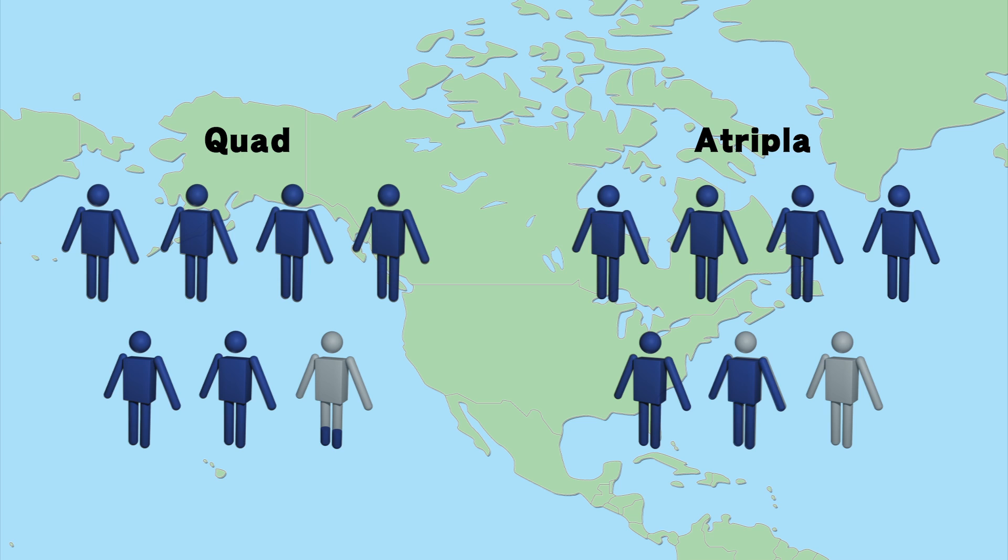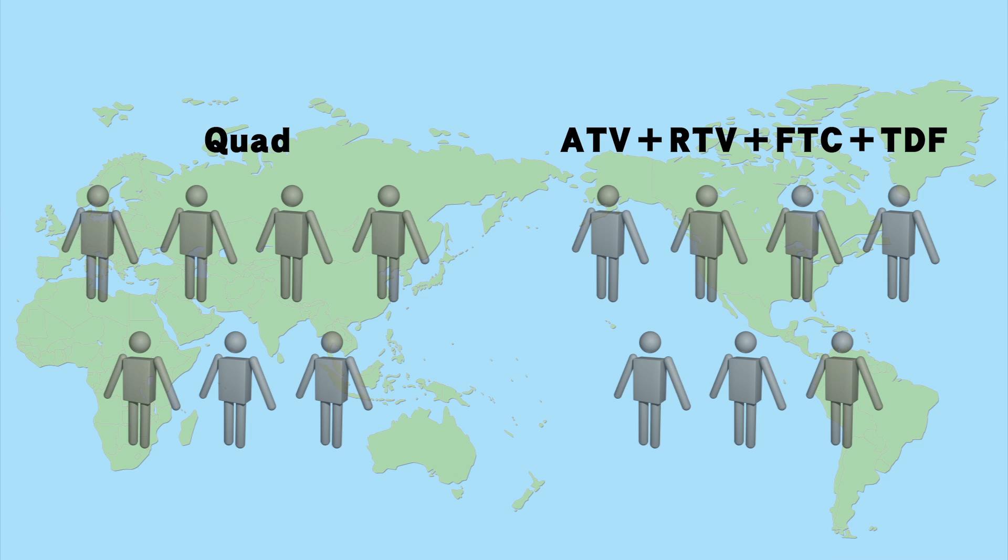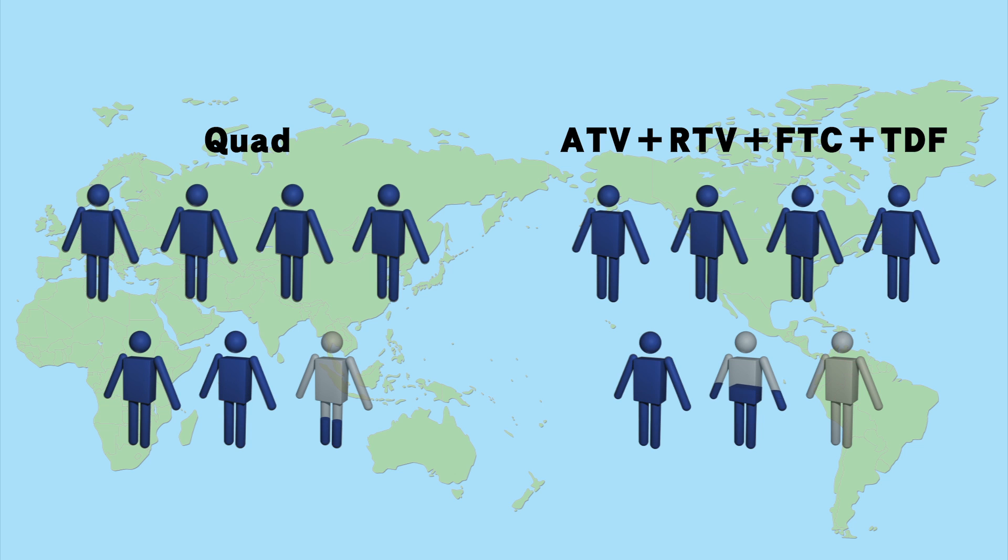Another study of more than 700 HIV carriers from around the world assigned patients to take either QUAD or a cocktail of four drugs. The study found viral suppression in 90% of people in the QUAD group, versus 87% in the group that took four drugs.